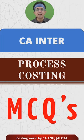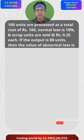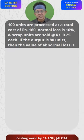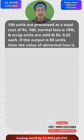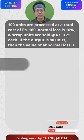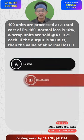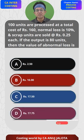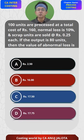Let's do the question. 100 units are processed at a total cost of 160. Normal loss is 10 percent and scrap units are sold at 0.25 each. If the output is 80 units, then the value of abnormal loss is — what? The four options are: 2.5, 16, 17.5, and 17.75. Keep your calculators with you. To find out the value of abnormal loss, there are two things: find out the quantity and find out the cost, then multiply.